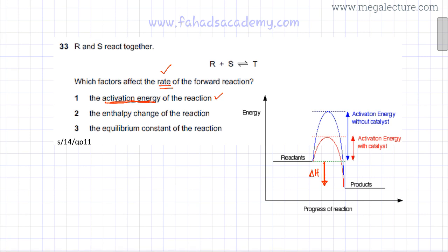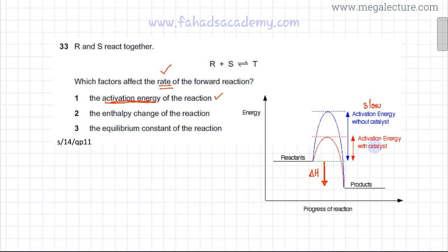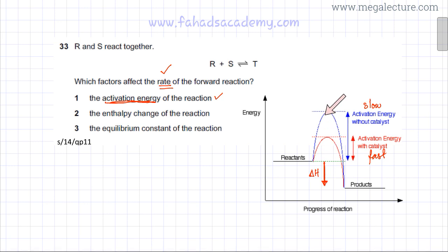You have to break old bonds first, then new bonds form and energy is released. If breaking old bonds requires a lot of energy, the reaction is going to be very slow. So if the activation energy is high, that's a slow reaction; if it's lower, that's a fast reaction. The overall enthalpy change plays little role in determining the rate of the reaction — it's always the activation energy, the initial energy needed to start a reaction.